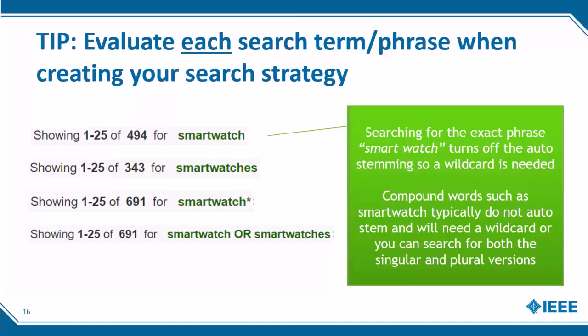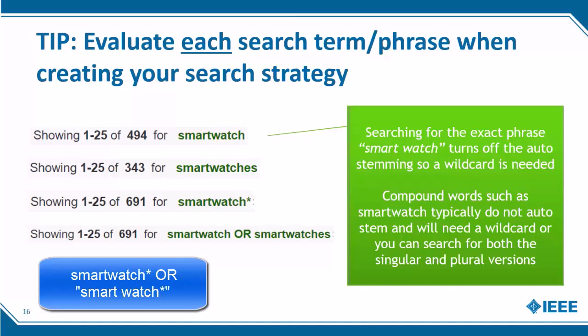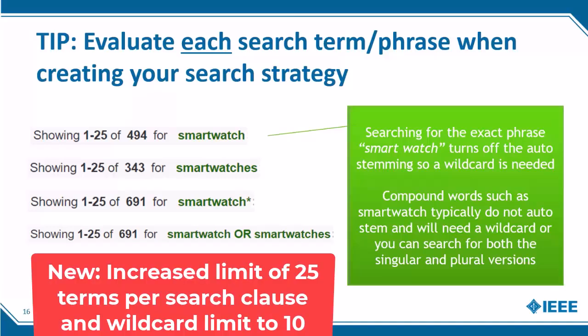A search in Xplore finds that "smartwatch" is sometimes used as two words and other times as one word. In addition, compound words such as "smartwatch" as one word typically do not auto-stem, and when testing this, I find that "smartwatch" as one word does not find "smartwatches" plural. So in this case, I would need to search both "smartwatch" as one word with an asterisk, and "smart watch" as two words in quotes with an asterisk. If I am concerned about exceeding the seven wildcard limit, I could search for both the singular and plural versions of the word, as long as I have fewer than 20 terms in the search clause.